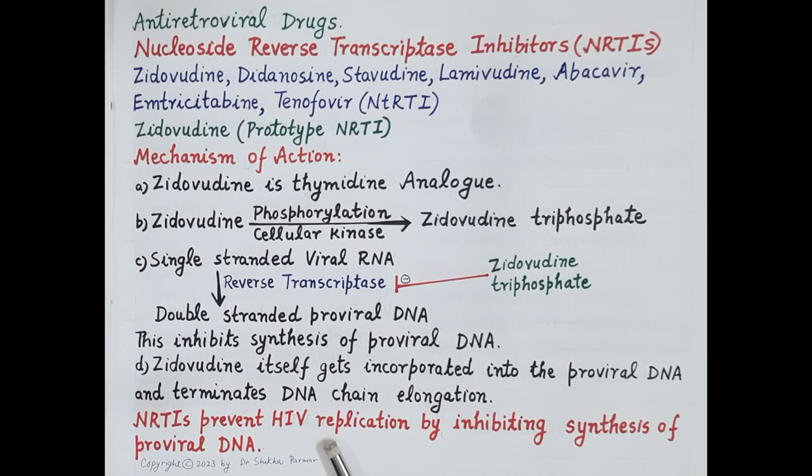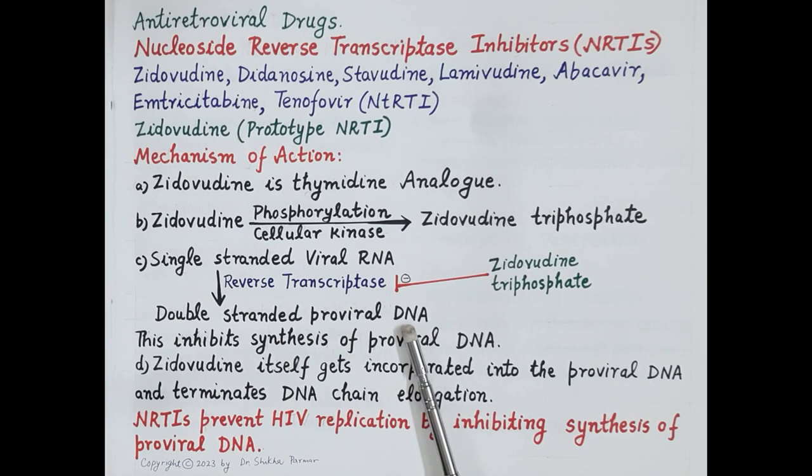This incorporation causes termination of proviral DNA chain elongation and proviral DNA synthesis stops. So nucleoside and nucleotide reverse transcriptase inhibitors inhibit HIV replication by inhibiting the synthesis of proviral DNA. This category of drugs forms the backbone of antiretroviral therapy.